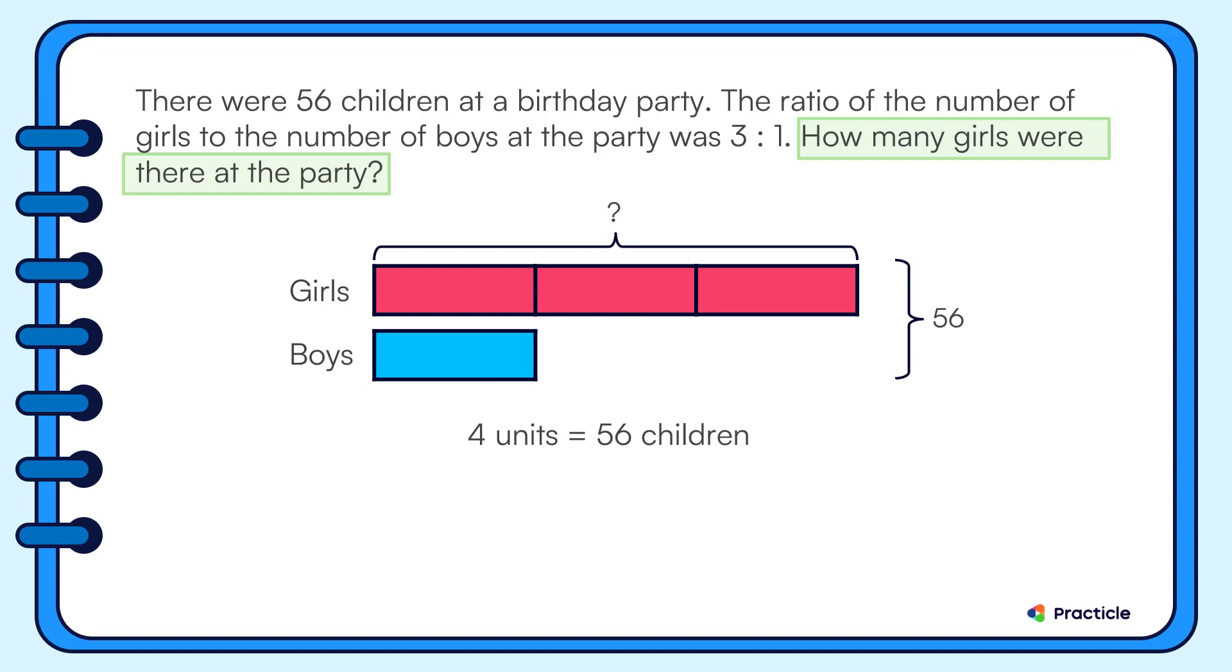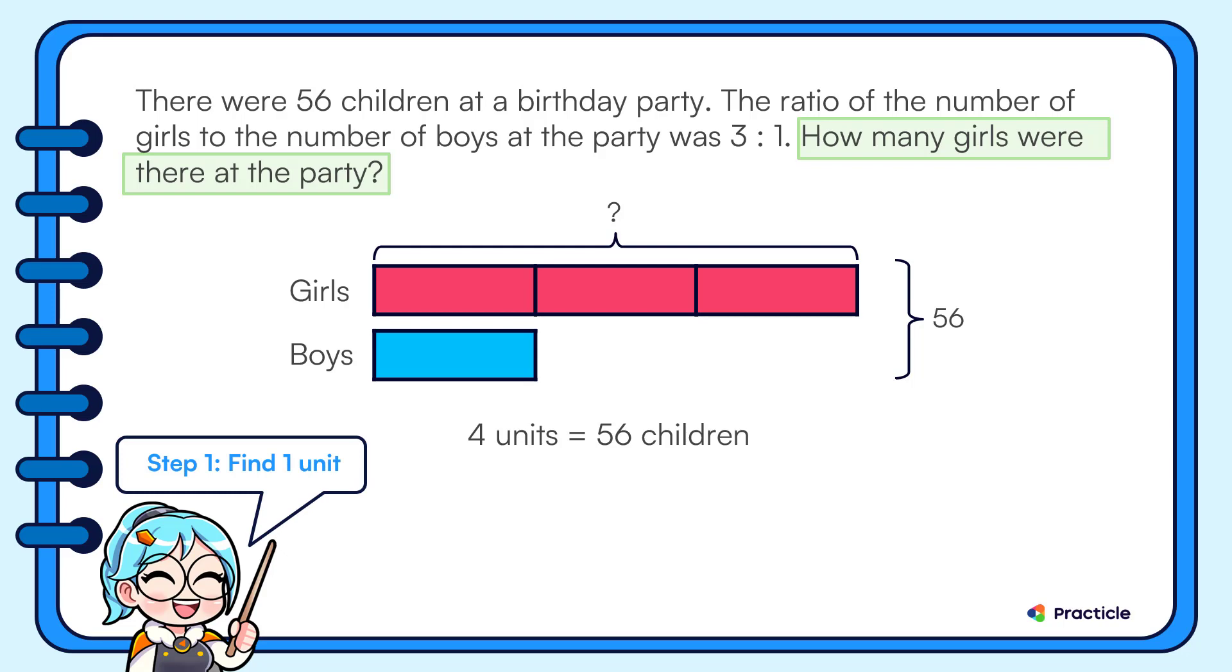So how can we make use of what we know to find our answer? Well, we can do this in two steps. First, we're going to find out how many children one unit represents. Once we know that, it's going to be really easy to find the number of children that three units represent.